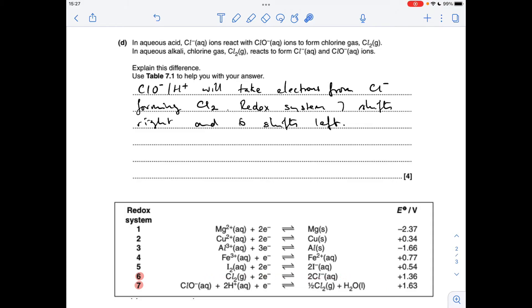And then if we move on to the other scenario, in aqueous alkali chlorine gas reacts to form CLO minus ions. You can see we've got H+ ions in system 7, so if we add alkali then it's going to react with the H+ ions and remove them. System 7 is actually going to move more to the left to replace the lost H+ ions.